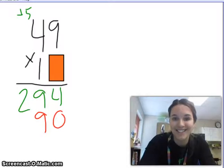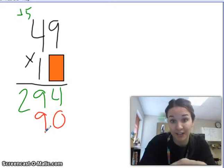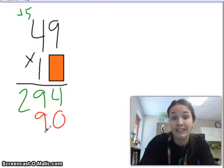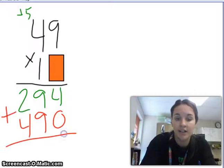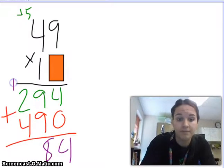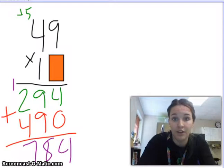Then, 1 ten times 4 tens will give me 40 tens. Because I have two zeros. A 0 for my 40 and a 0 for my 10. 40 tens is the same as 400. Now that I have my two partial products, I can add together and get 784.